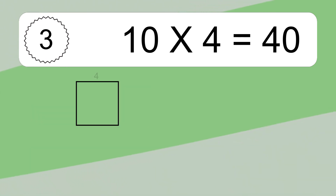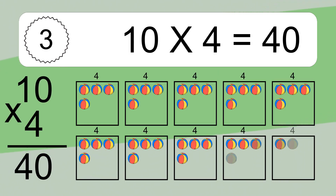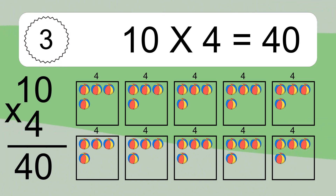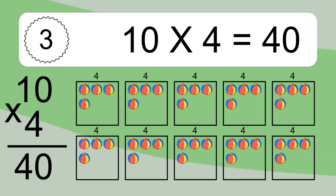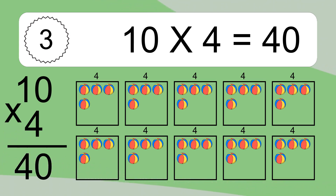10 times 4 equals what? 10 times 4 equals 40. We have 10 boxes, and each box has 4 colorful balls inside. If you count all the balls in all the boxes together, you will have 10 times 4 balls. This equals 40 balls.